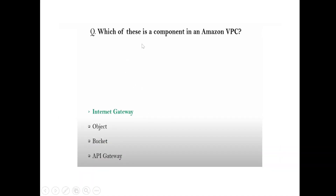Question: Which of the following is a component of Amazon VPC? There are nearly seven or eight components — one of them is the Internet Gateway. You can Google 'what are the components of Amazon VPC' to find all of them.